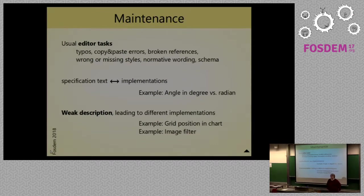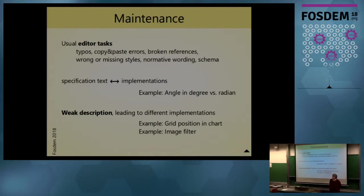What does this TC have to do? The first part is maintenance. The specification has about 1,300 pages. Such large documents always have typos, broken references, and such errors. Some semantics are reflected in styles, which are a source of additional errors. Furthermore, special care is needed in using normative keywords and keeping the schema and prose text matched.